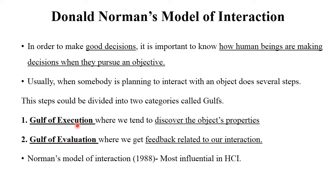Donald Norman's model has mainly two parts: the gulf of execution and the gulf of evaluation. The gulf of execution means discovering the object's properties, and the gulf of evaluation means feedback related to our interaction. This is a 1988 model and is most influential in human-computer interaction. It is used for taking good decisions regarding completing your objective or goal.